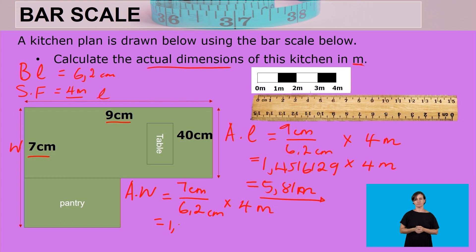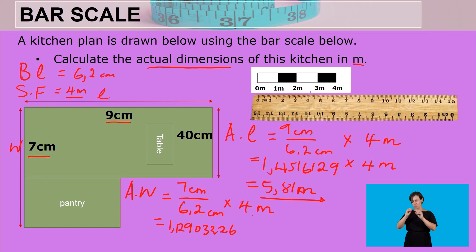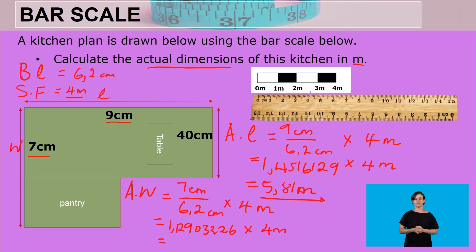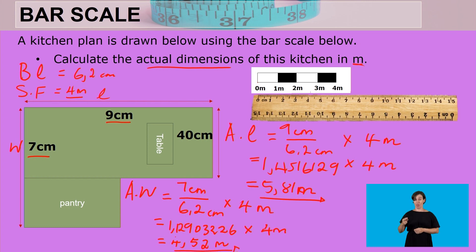Seven divided by 6.2 gives us 1.12903226. It is important to write the entire value because rounding it off will affect the final answer. Multiplying by 4 meters gives us 4.516, rounded to two decimal places as 4.52 meters. So the actual width of the kitchen is 4.52 meters.